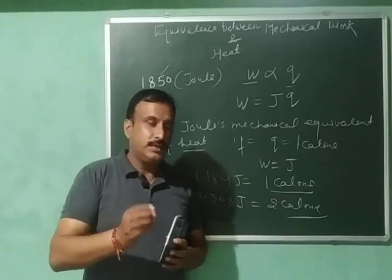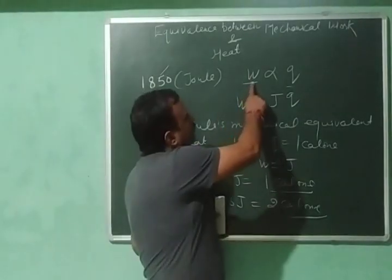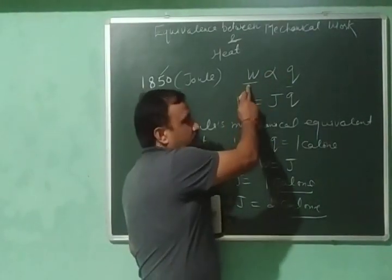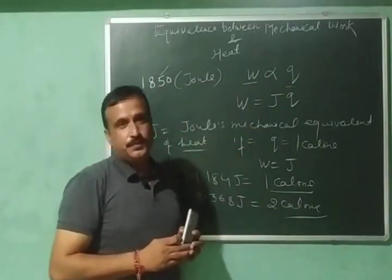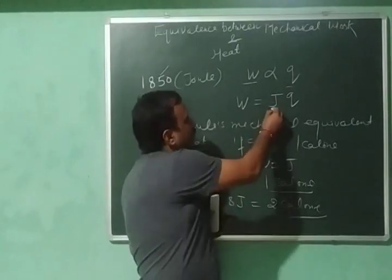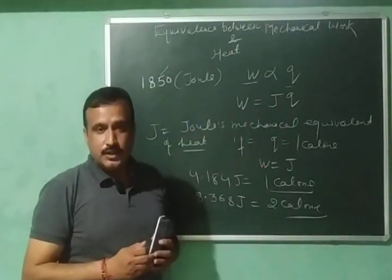He also found that work done is directly proportional to heat. This means larger is the work done, more is the heat produced. And when this proportionality is converted into equality, we are going to have a constant.